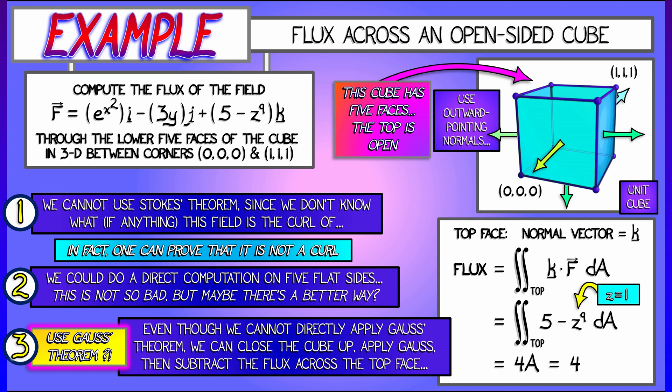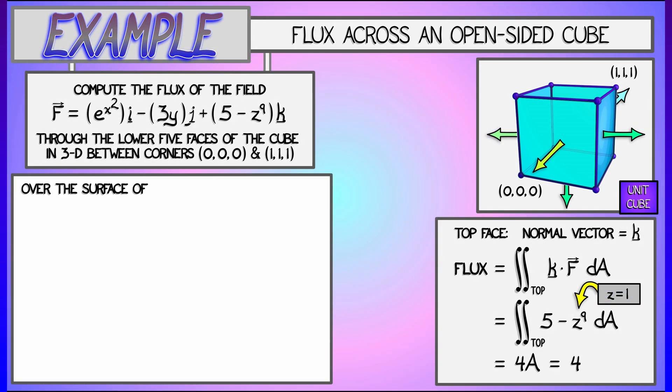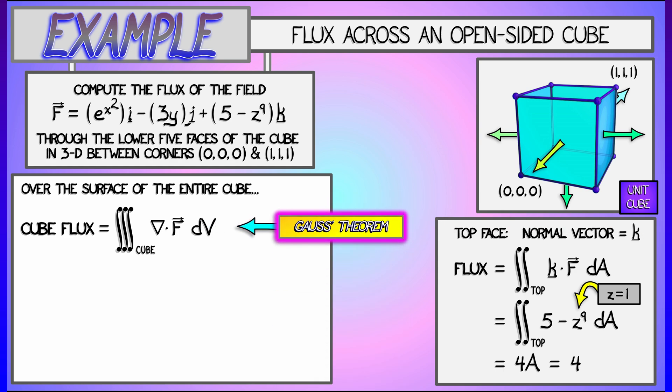Okay, that was not so bad, but instead of doing the other five faces, let's keep going. Let's apply Gauss' theorem. Let's close up the cube by adding that top face and then integrate the divergence of f over the interior.